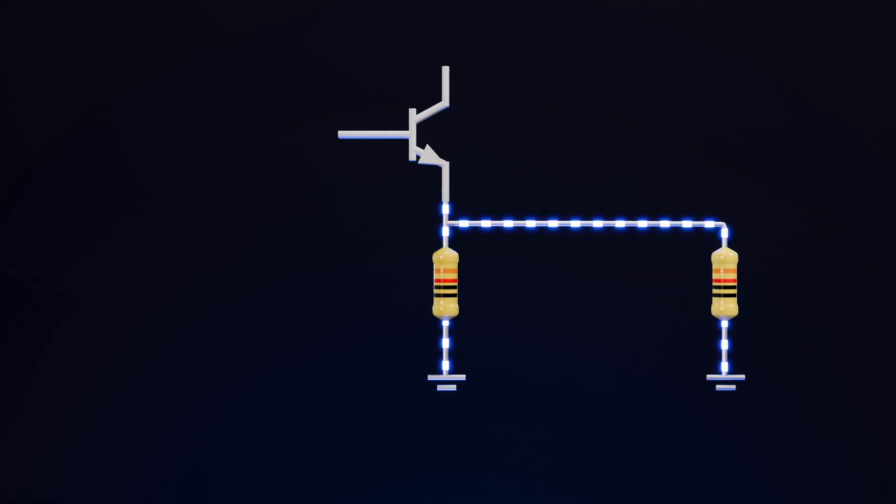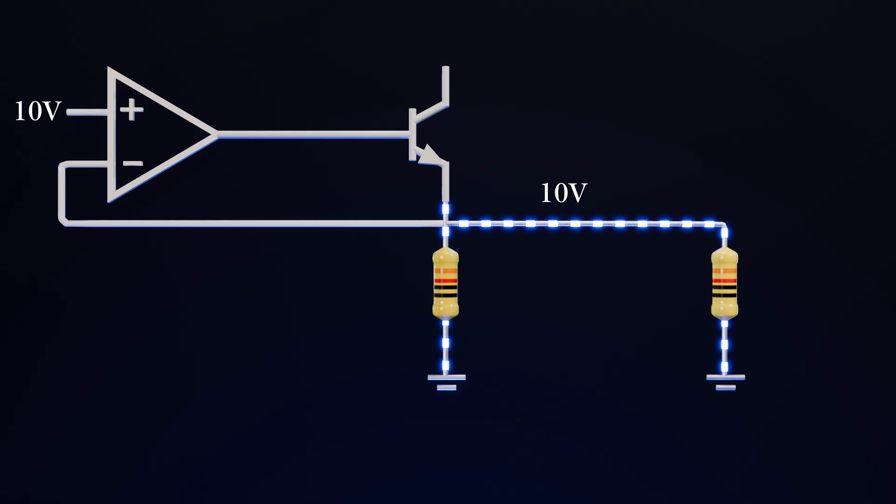To solve this problem, we can use an op amp. The output of the op amp will be connected to the base of the transistor. The negative terminal will be connected to this point to sense the output voltage. Now, if we apply a voltage to the positive terminal of the op amp, we'll get the same voltage on this output.